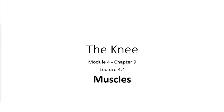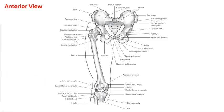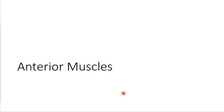This is lecture 4.6, the third lecture of module four, looking at the knee musculature. Lucky for us, most of the muscles of the knee we've already covered in the hip. The majority are biarticular muscles that cross the hip and also function at the knee, so we'll be reviewing those same muscles in terms of their function at the knee versus the hip.